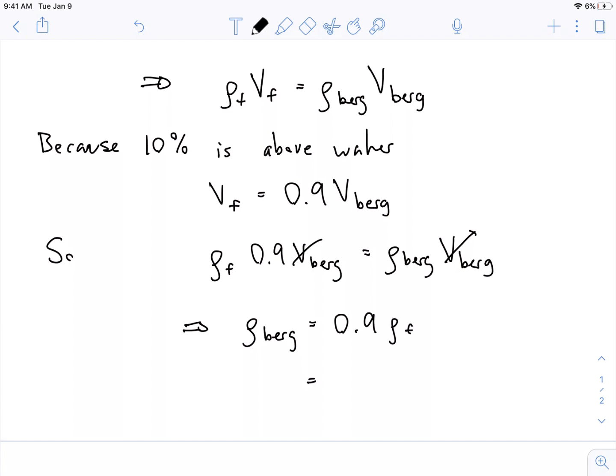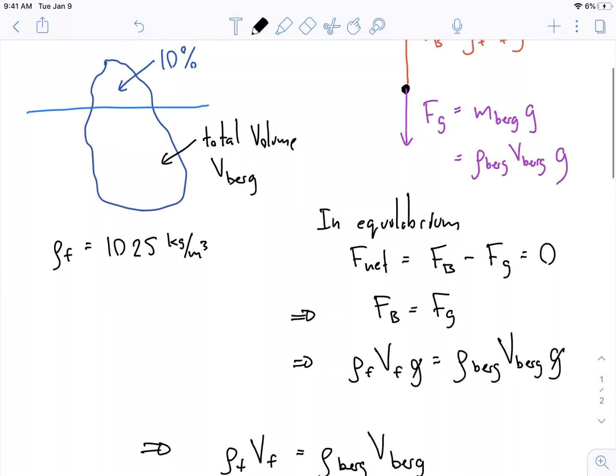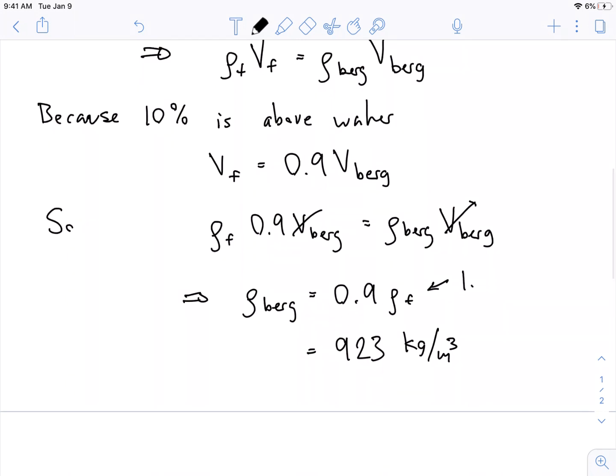And we have that number from the fluid. And if I plug in that number from before, I get 923 kilograms per meter cubed. Right. I think this number was what was it? 1025. Cool.